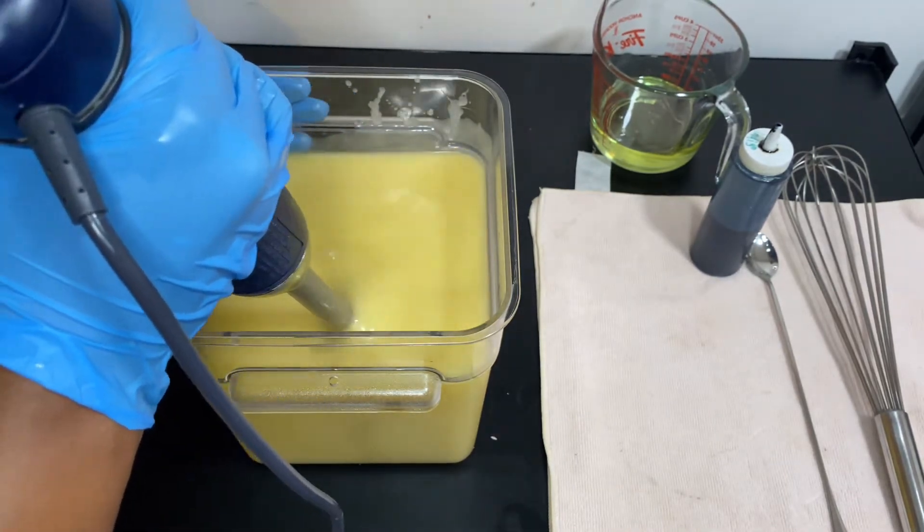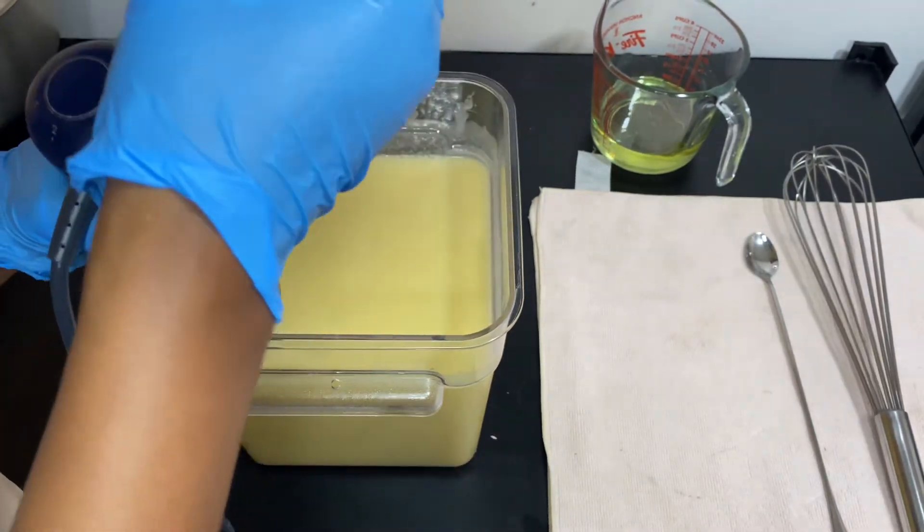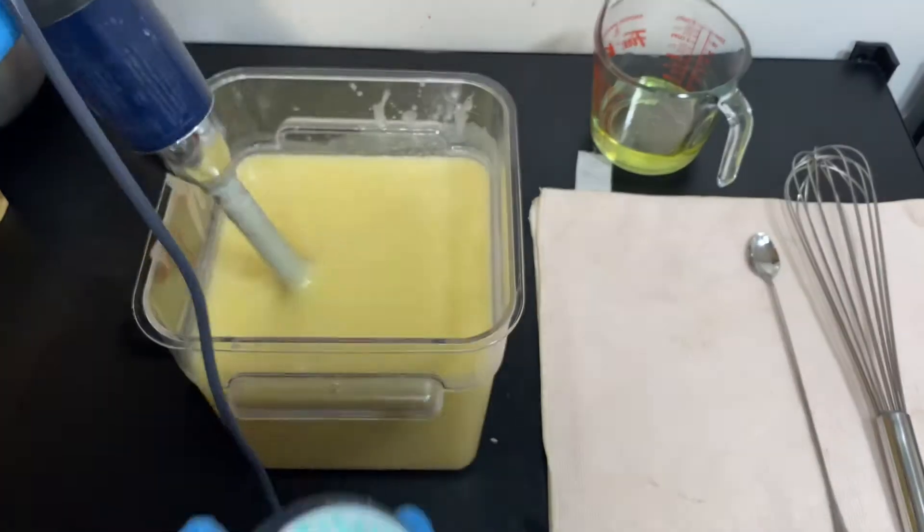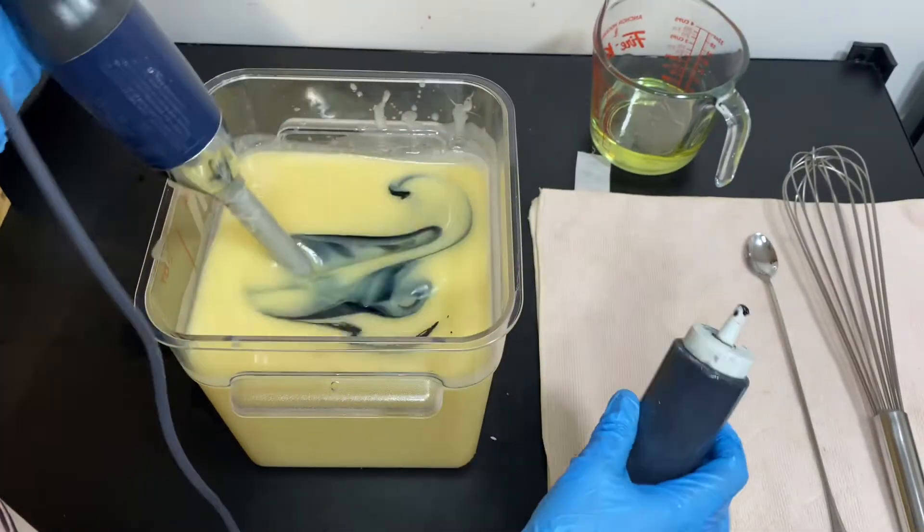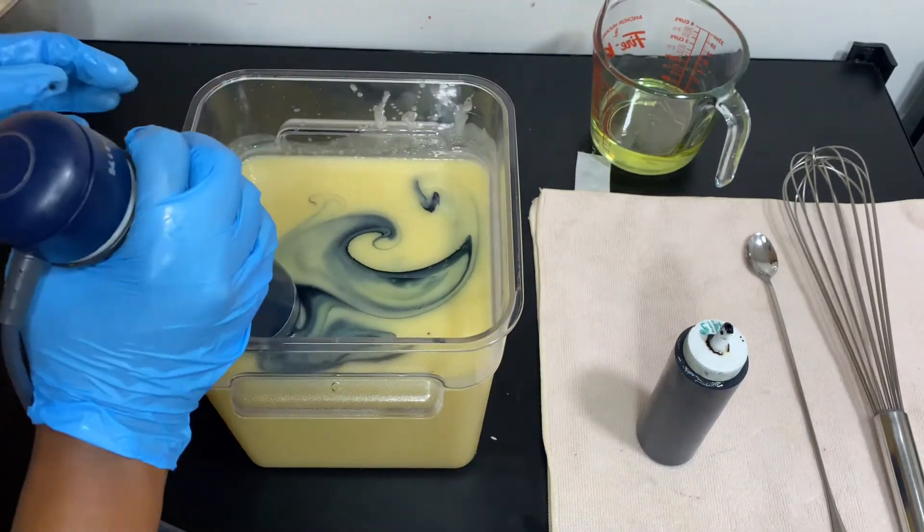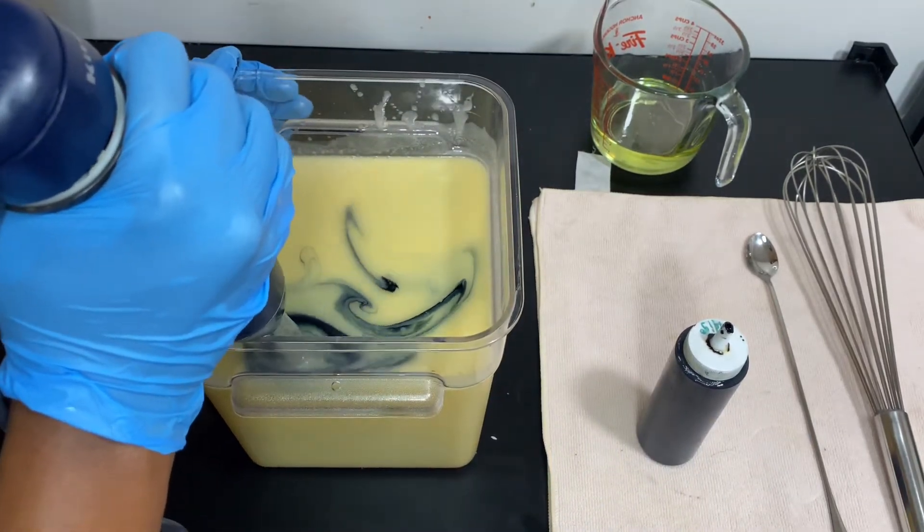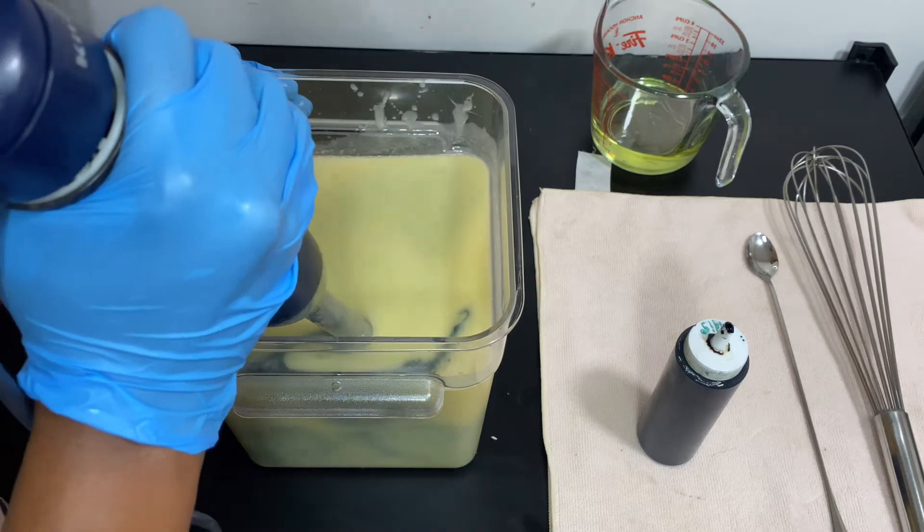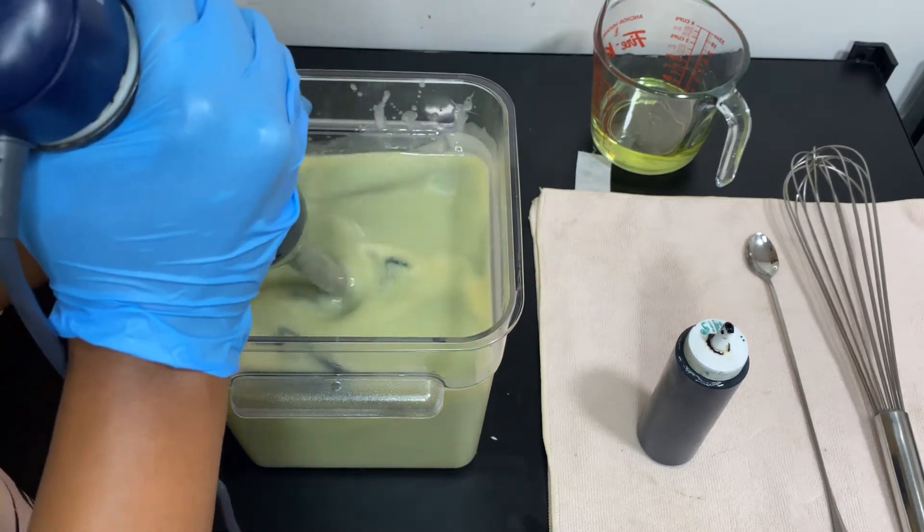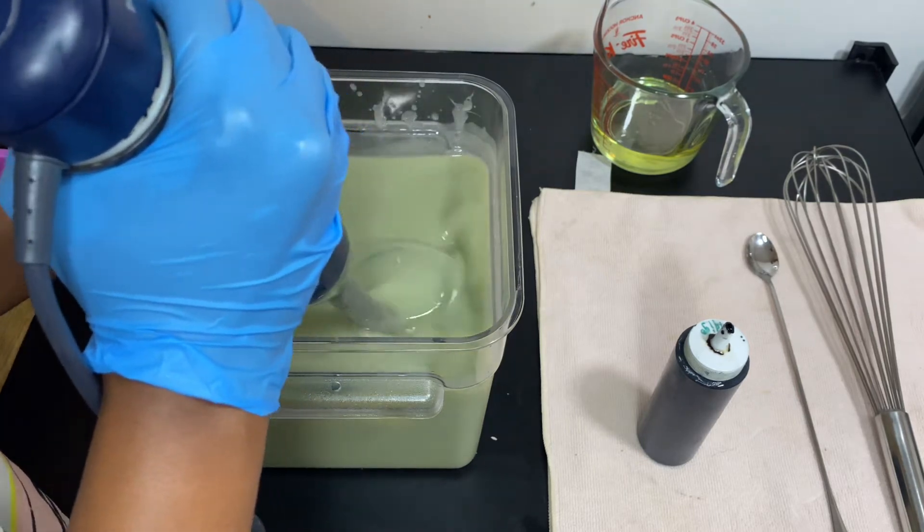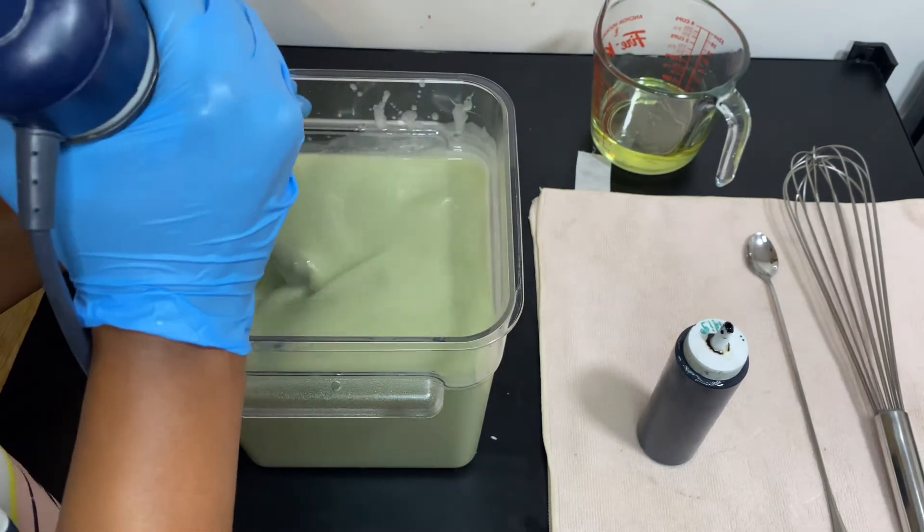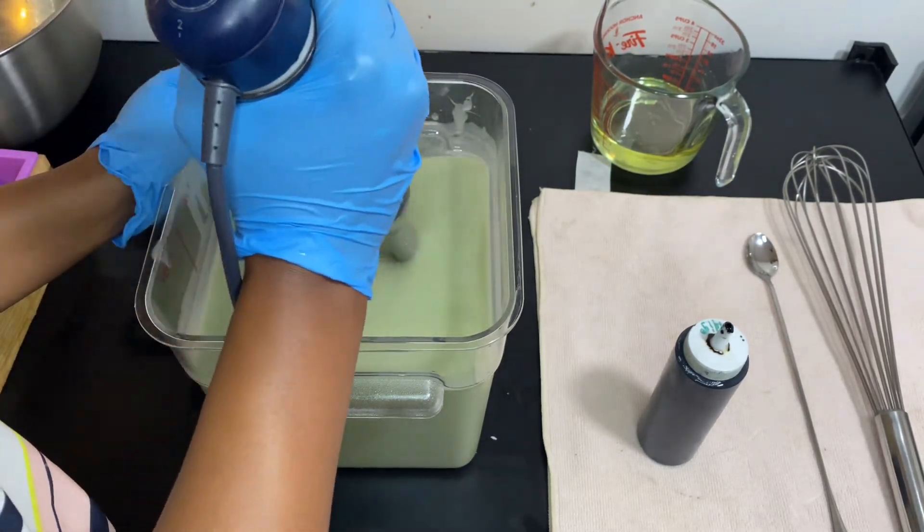All right, so as you guys can see we have reached a trace - we are emulsified. And I'm going to go ahead with some indigo oil. I pre-mixed my indigo in a light oil so that it evenly disperses within the soap batter. And as you can see it's giving it a nice pastel green color, which I think mimics aloe. So I'm really happy with the way the soap color has turned out.